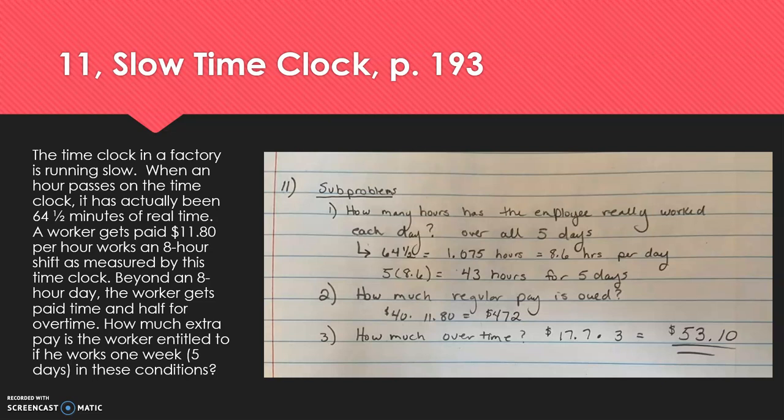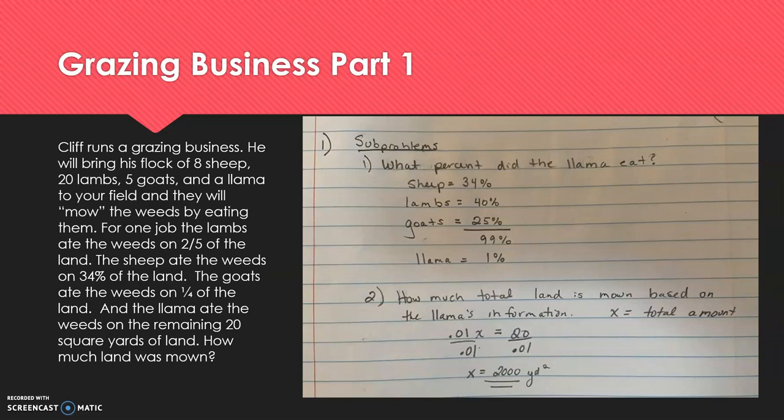How much regular pay is owed? I could have simply determined 43 minus 40 would give me the three extra hours. Or as my second sub-problem, it could have just been, what is the rate for time and a half? That really was unneeded. So just wanted to point that out. Okay, the last problem.